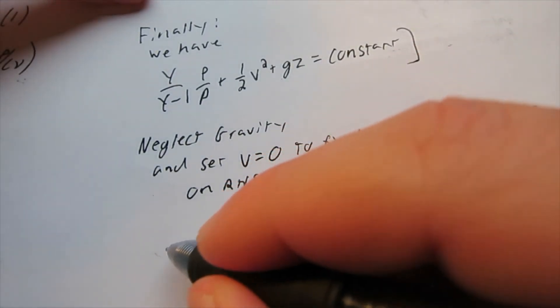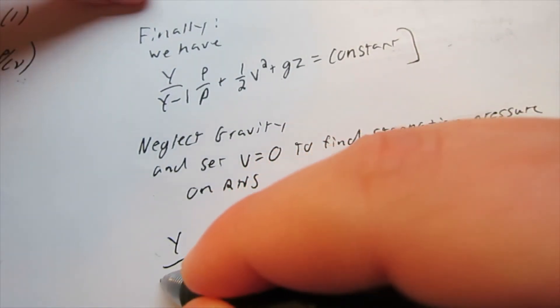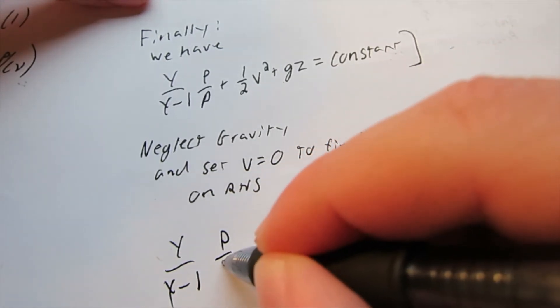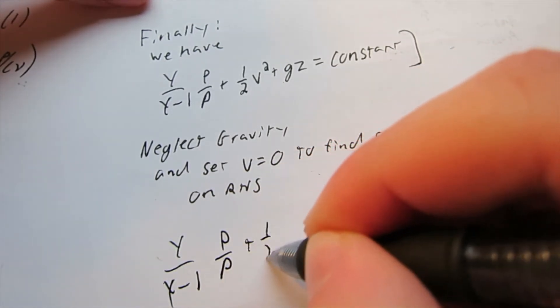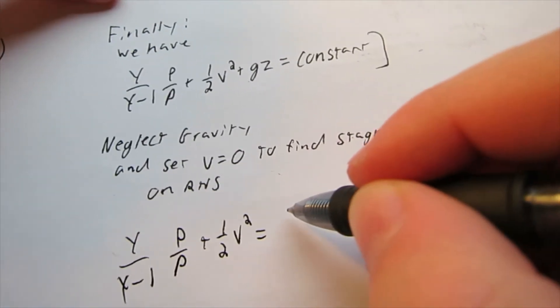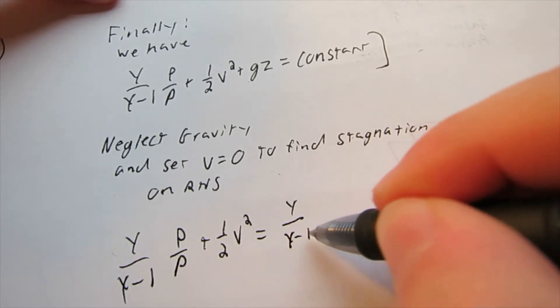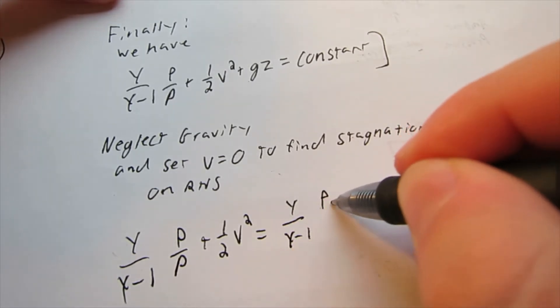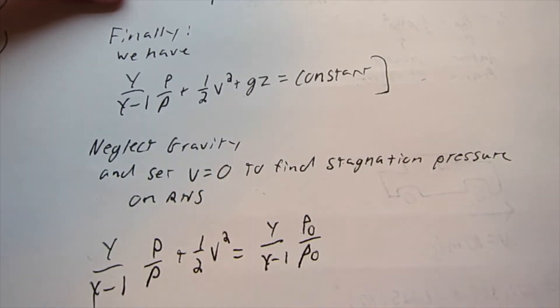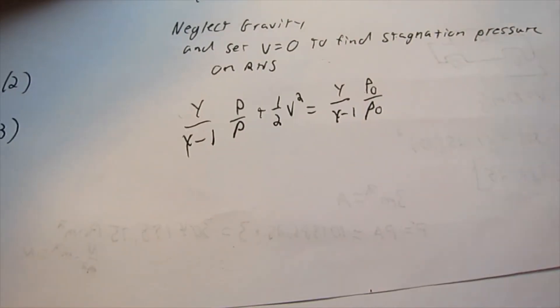Now, writing all this out again, we have gamma over gamma minus 1 pressure divided by density plus 1 half V squared equals gamma over gamma minus 1, then we got our stagnation pressure and our stagnation density.